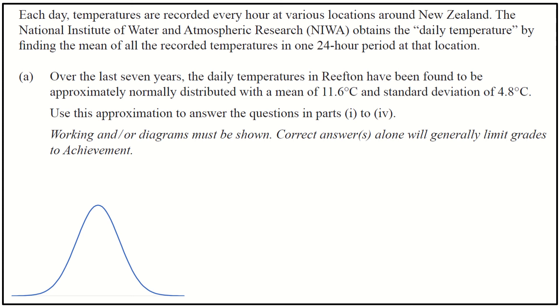What we want to do is make sure we understand what the data is about. I'm going to look at this - okay, this is talking about temperatures. With those temperatures, we've got some more detailed information: they've got data for the last seven years, and we've been told they're normally distributed with a mean of 11.6 and a standard deviation of 4.8.